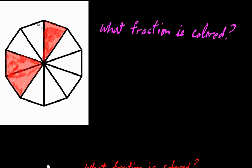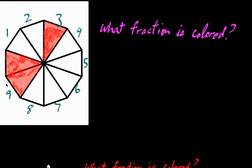It looks like this decagon is divided up into a bunch of triangles. How many different triangles are there? It's always worth writing that out explicitly. Counting them out: 1, 2, 3, 4, 5, 6, 7, 8, 9, 10 — so there are 10 equal-sized triangles.